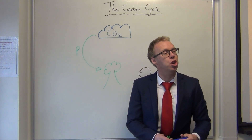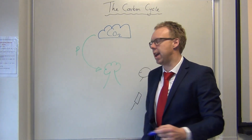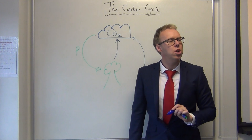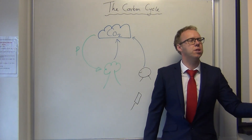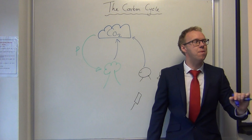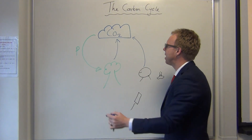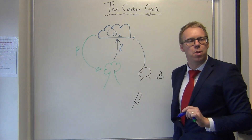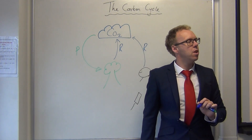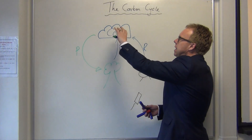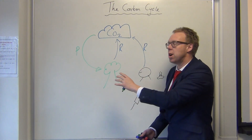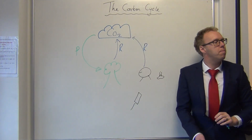All living things do this arrow here. The plants and the herbivore do that arrow there, which releases CO2 into the atmosphere. Respiration. So the carbon in the atmosphere becomes part of our ecosystem by photosynthesis, but it's also released back into the ecosystem by respiration.